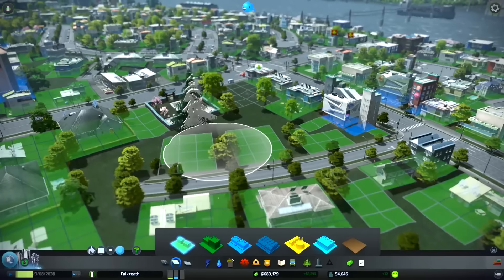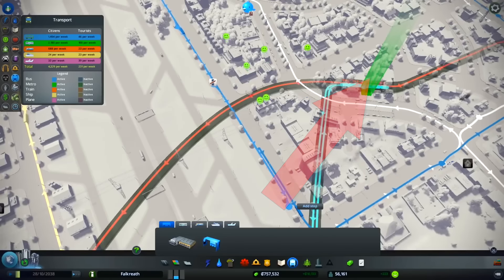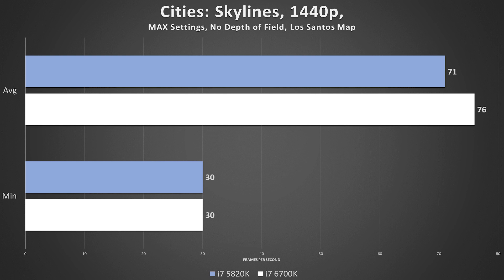Cities: Skylines leverages three cores heavily, and because of this gives the point to the 6700K. The Skylake CPU's stronger single-core performance plays a huge role here, and the fact that the game isn't optimized for anything above three cores doesn't give an edge to the 5820K. When games aren't optimized for more cores, primary limiting factors will be frequency and core strength — IPC. Cities yields identical minimums and a 5fps disparity on average. Still smooth gameplay, but 5fps is 5fps. Another win for the 6700K.